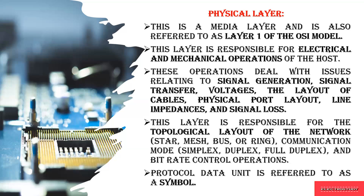The nodes will decide to form either star, mesh, bus, or ring topology. It also decides what kind of communication to be followed — either simplex, duplex, or full duplex. All these operations are carried out in the first layer called the physical layer. The data transferred from this layer is called by the term symbol.